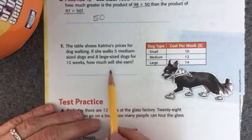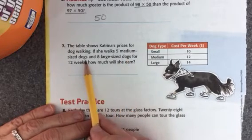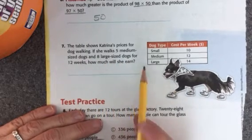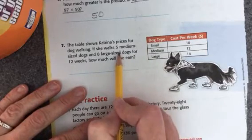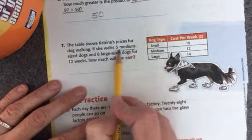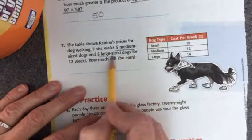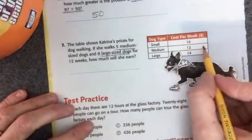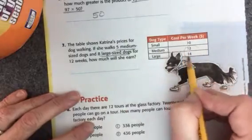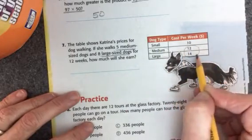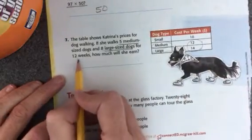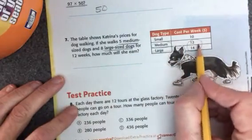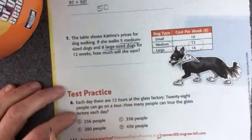The table shows Katrina's prices for dog walking. If she walks 5 medium-sized dogs and 8 medium-sized dogs for 12 weeks, how much will she earn? You're going to have to figure out how much it will cost for her to walk 5 medium dogs and 8 large dogs in 1 week. So you'll need to take medium and large, add those two numbers together. Then after you multiply those numbers together, then you can multiply by 12 to show how much she earned in 12 weeks. This will show how much she earned in 1 week. When you times by 12, it'll show how much she earned in 12 weeks.